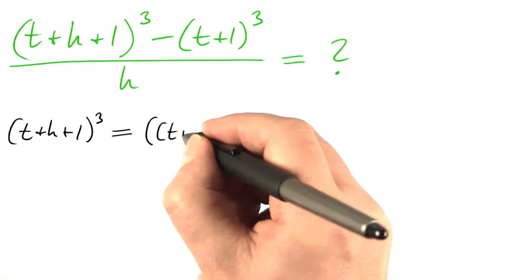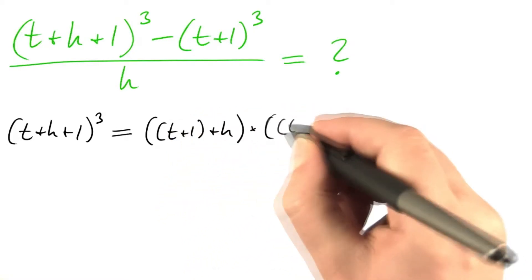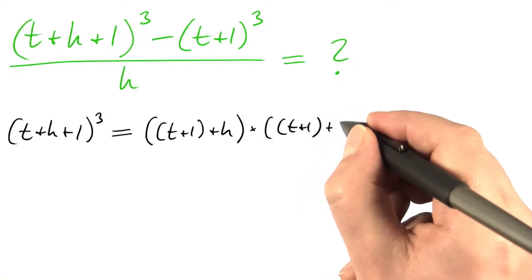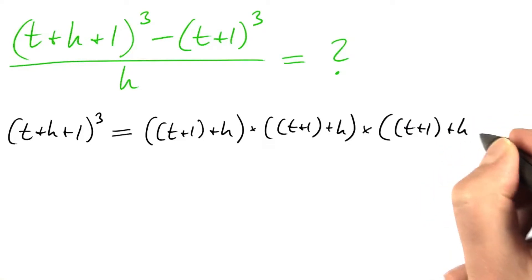I write it as t plus 1 plus h times t plus 1 plus h times t plus 1 plus h.